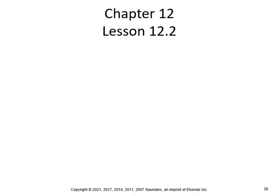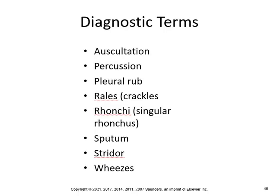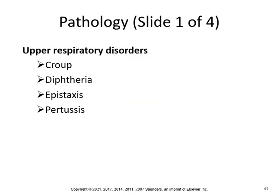All right, so we'll continue with chapter 12 part two. We'll talk about auscultation, percussion, the plural rub, rails which are crackles, ronchi, sputum, stridor, and wheezes.